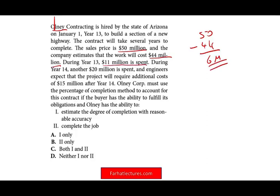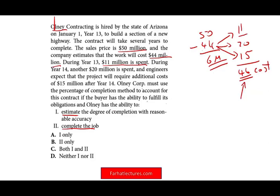During year 13, $11 million is spent. During year 14, another $20 million is spent, and engineers expect the project will require an additional cost of $15 million — so total cost will be $46 million. Only Corporation must use the percentage of completion method if the buyer has the ability to fulfill its obligation and Only has the ability to complete the work, and can estimate the degree of completion with reasonable accuracy. Here we are giving that reasonable accuracy — our cost initially was $44 million, then after a year or two we find out it's $46 million, still a reasonable estimate.